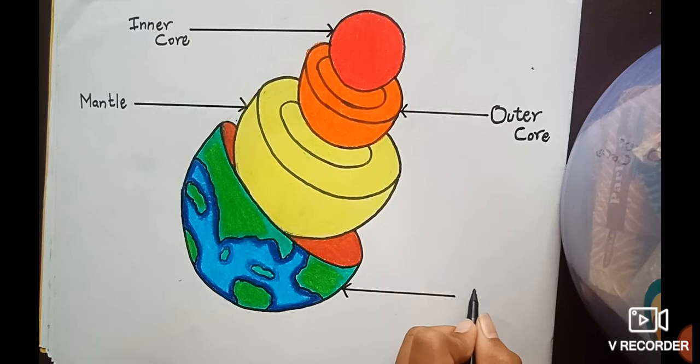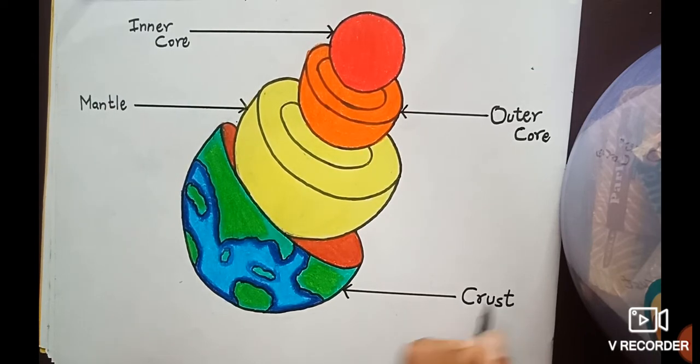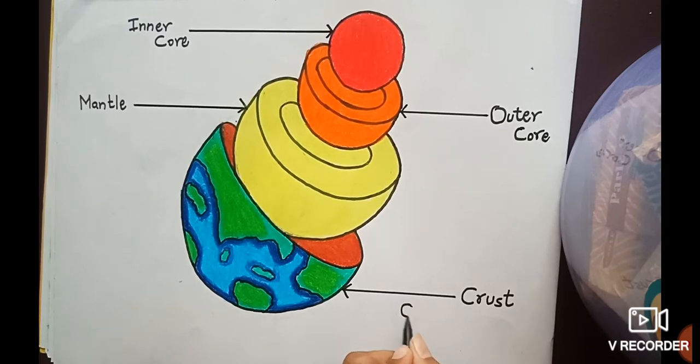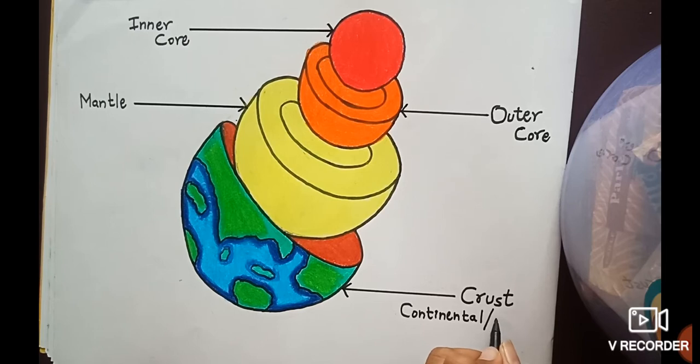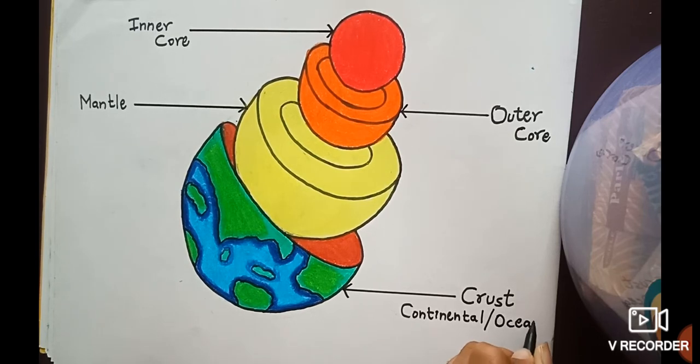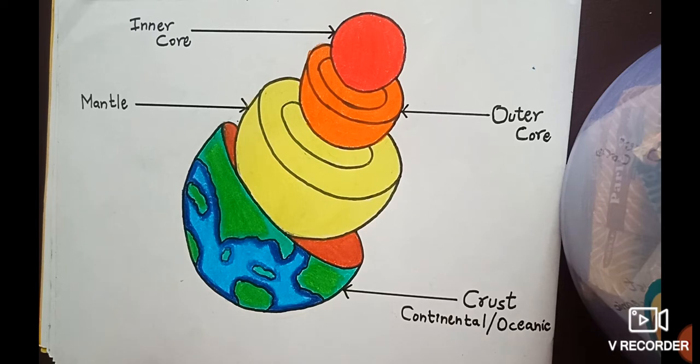Then the last layer is crust. So this is the continental plus oceanic crust because it consists of oceans and continents as well. So continental: C-O-N-T-I-N-E-N-T-A-L slash oceanic: O-C-E-A-N-I-C. I'll repeat the spelling of oceanic: O-C-E-A-N-I-C. Sorry for the mistake. Please like the video and subscribe to the channel. That's all, bye!